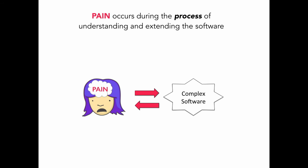Pain is a consequence of how we interact with the code. Pain occurs during this process of understanding and extending the software. So I started optimizing for what I call idea flow — this flow of ideas between the developer and the software — rather than optimizing the code itself. And I did that with the help of a data-driven feedback loop.